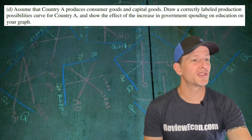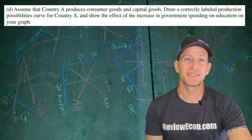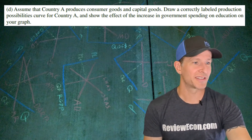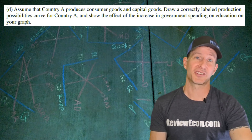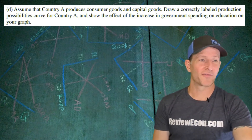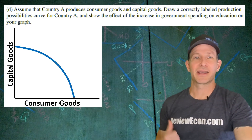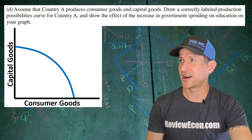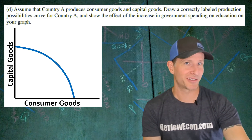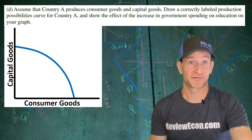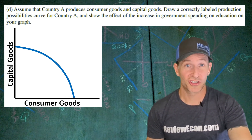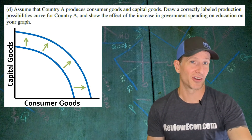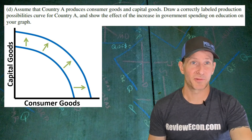For part D, we have to assume that country A produces consumer goods and capital goods, and draw a production possibilities curve for this country showing the impact of government spending on education. For the first point on this graph, we label our axes — consumer goods and capital goods — and draw in a concave production possibilities curve. For the second point, you show the economic growth as a shift outward of both sides of this curve.